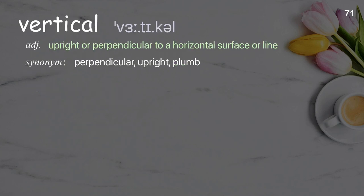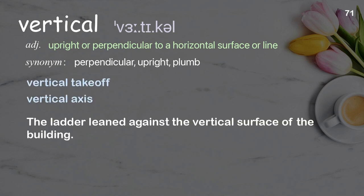Vertical: upright or perpendicular to a horizontal surface or line. Examples: Vertical takeoff. Vertical axis. The ladder leaned against the vertical surface of the building.